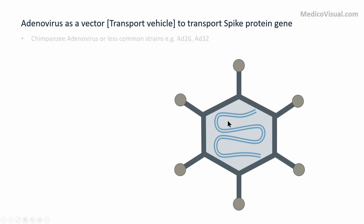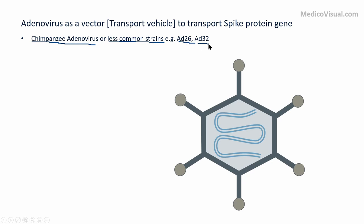For this reason, these vaccines use either the chimpanzee adenovirus, to which humans are not usually exposed, or sometimes they use less common strains of adenovirus, such as adenovirus 26 and adenovirus 32. Oxford-AstraZeneca uses the chimpanzee adenovirus, while Johnson & Johnson and CanSino Biologics use less common strains of adenovirus, to mitigate the problem of pre-existing immunity against the vector itself.